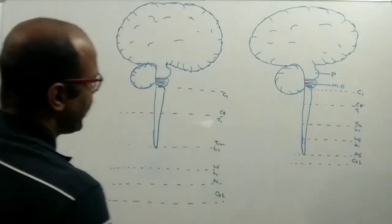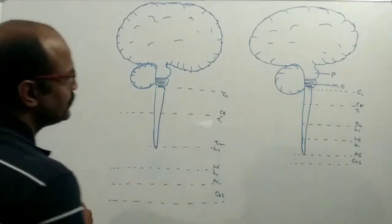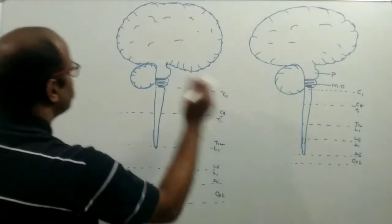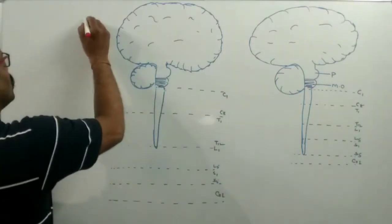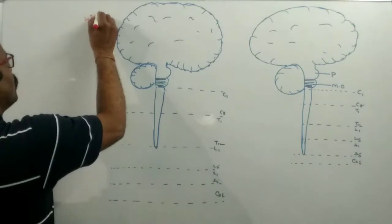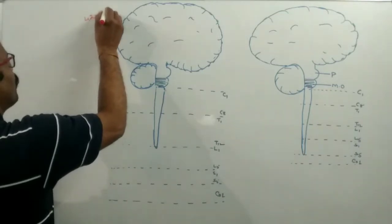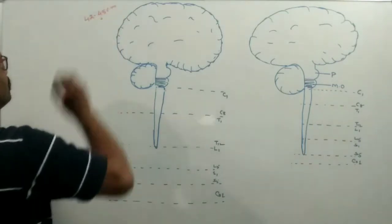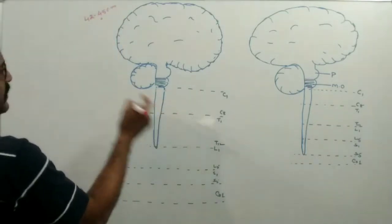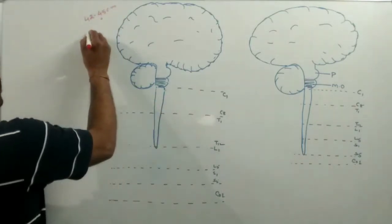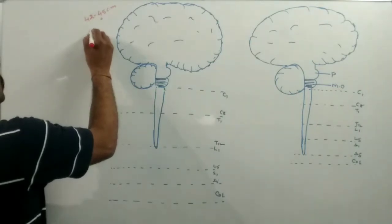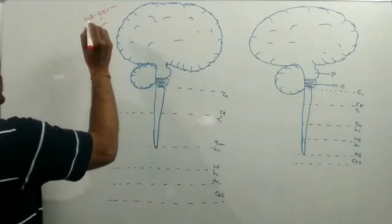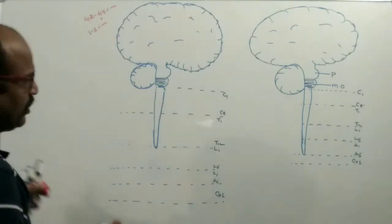In case of an adult, the length of the spinal cord is 42 to 45 cm, and the diameter of the spinal cord is 1 to 2 cm.